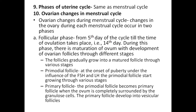The 10th question is ovarian changes during the menstrual cycle. Changes in the ovary during each menstrual cycle occur in two phases. The first is the follicular phase, from the 5th day of the cycle until ovulation on the 14th day. During this phase, there is maturation of the ovum with development of ovarian follicles through different stages.